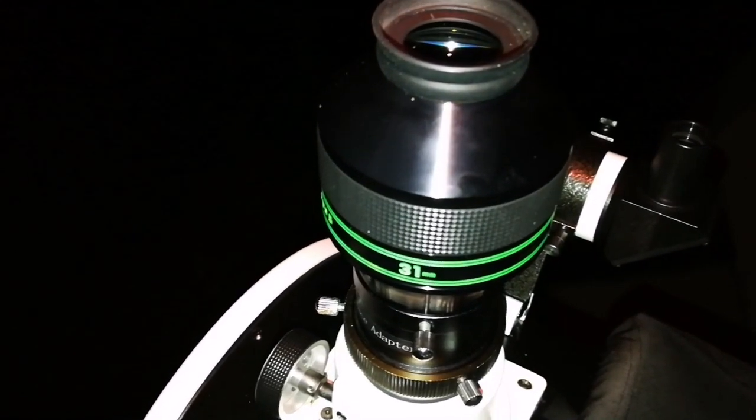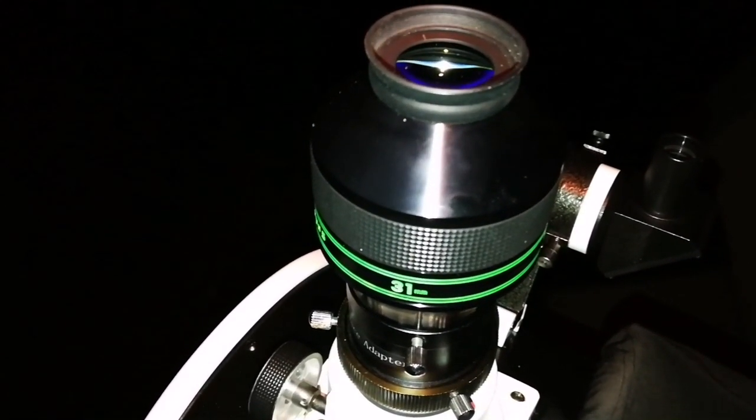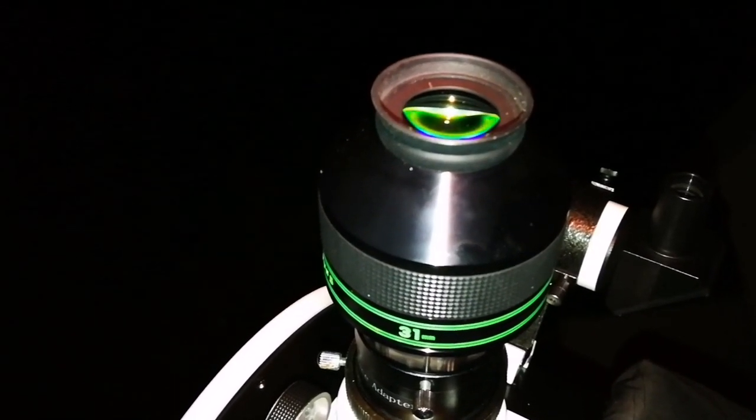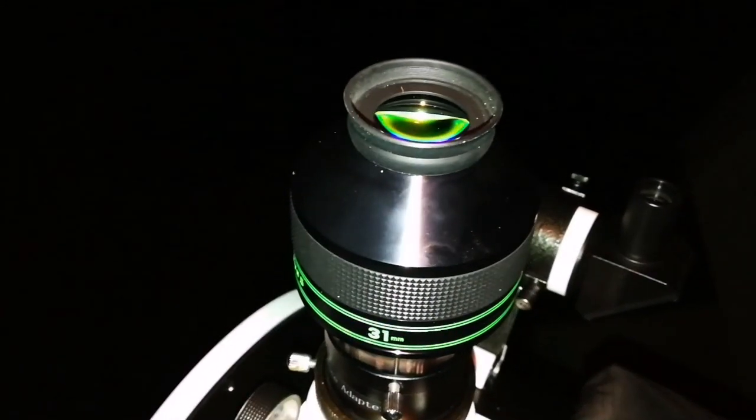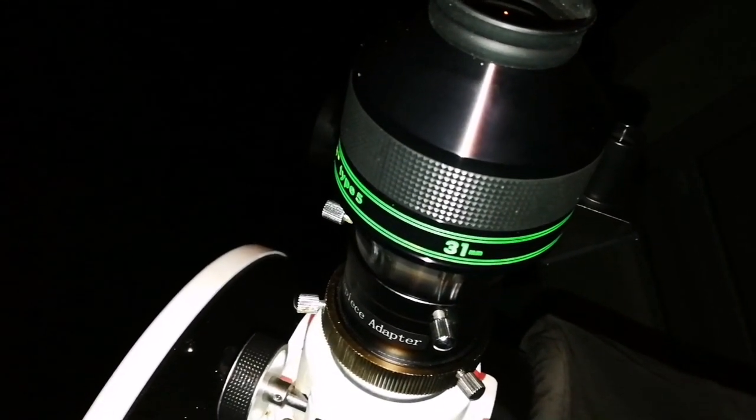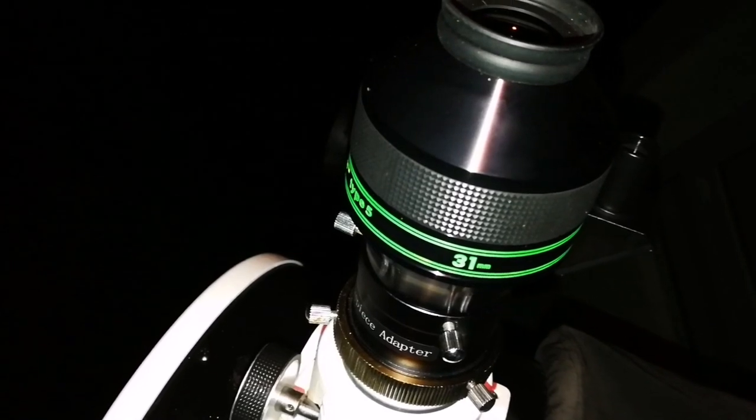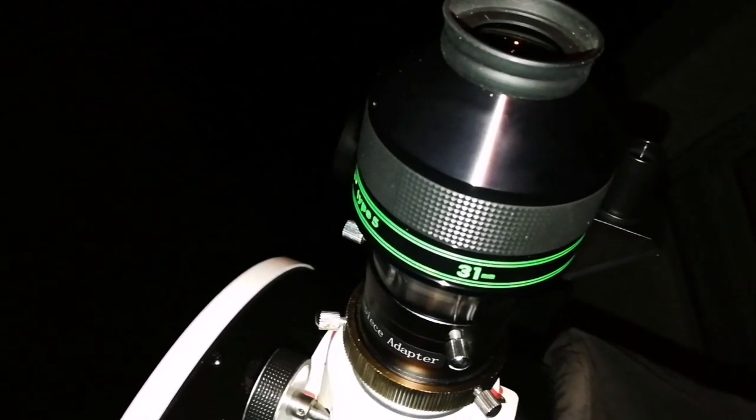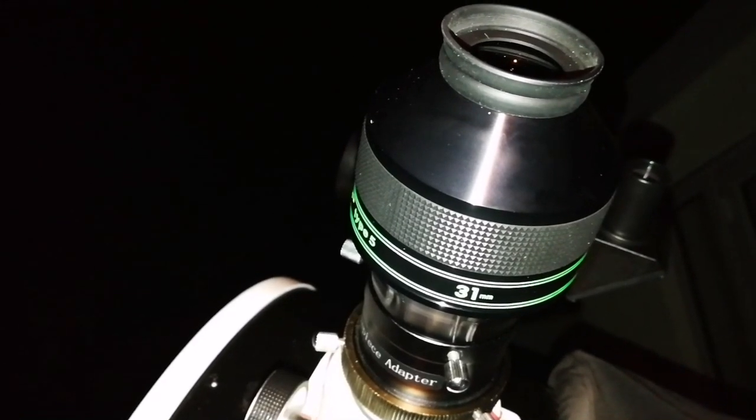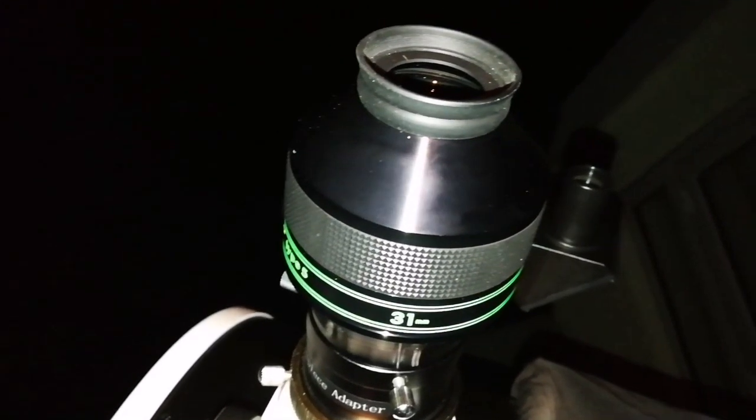I could have a Maxvision 68 degrees, 40 millimeter, which would give me a slightly wider field of view. I just wanted to test this Nagler, give it a chance. It's quite expensive at the same time, and I used it much. I hope this is a good use of it at this moment.